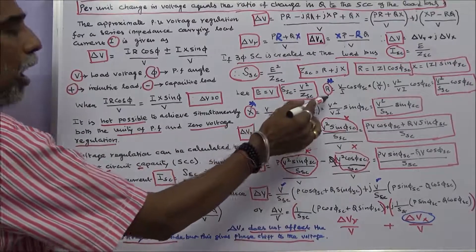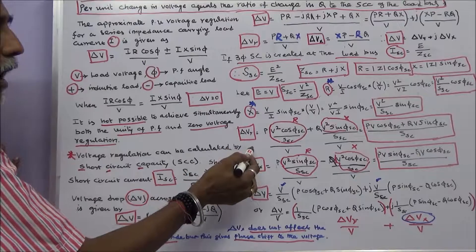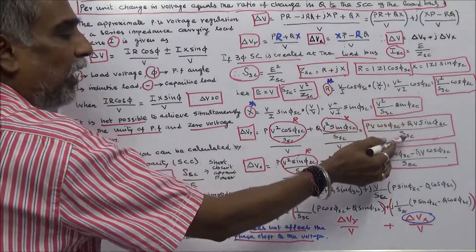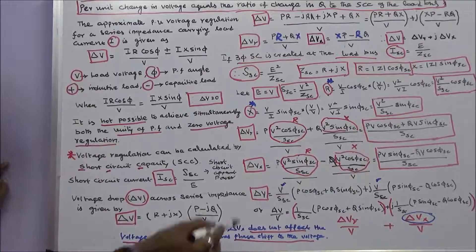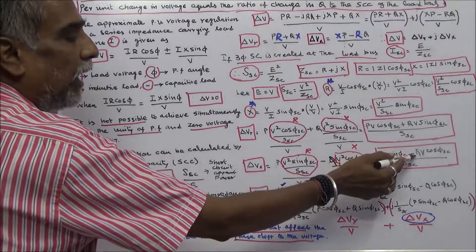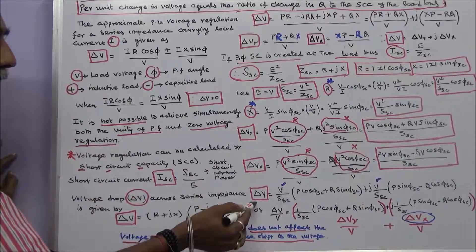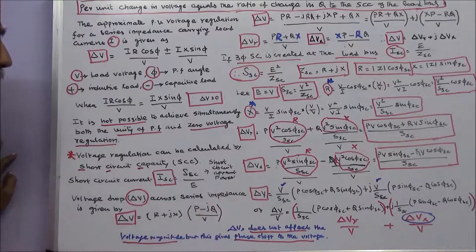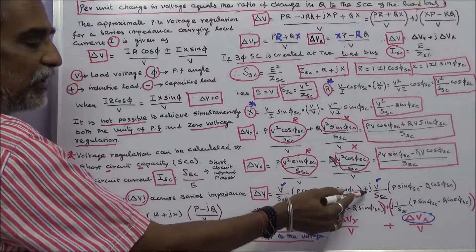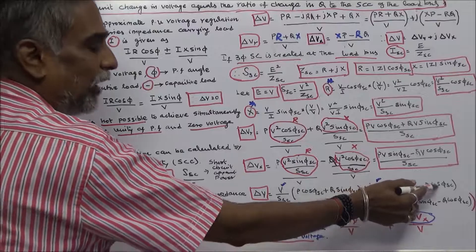Now substituting the values of R and X into delta V_R: delta V_R equals PV·cos(φ_SC) plus QV·sin(φ_SC), all divided by the short circuit apparent power. Similarly, the full expression for delta V equals V divided by S_SC times [P·cos(φ_SC) plus Q·sin(φ_SC)] plus j times V divided by S_SC times [P·sin(φ_SC) minus Q·cos(φ_SC)].